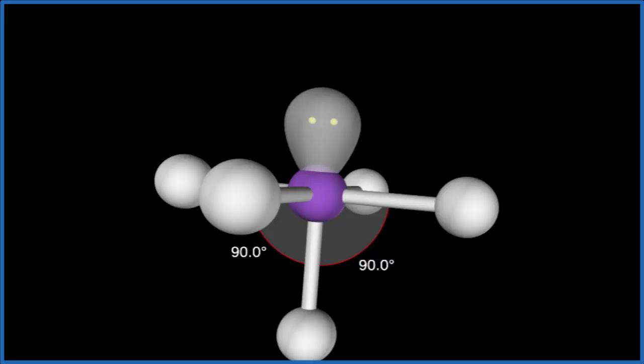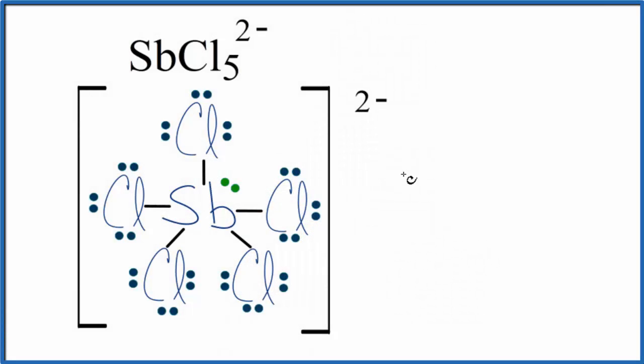Let's go back to our Lewis structure here. If you were using the AXE notation to figure out the molecular geometry for SbCl5 2-, A is the central atom, X are the atoms around that central atom, 1, 2, 3, 4, 5, and then E, that would be the lone pair. We have that lone pair right here. So AX5E1.